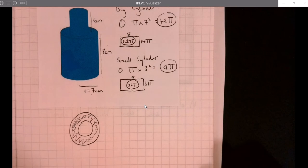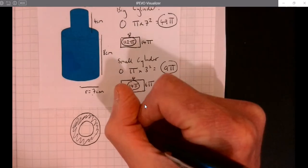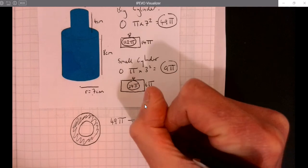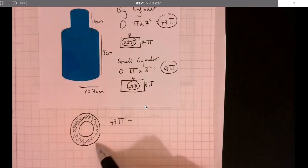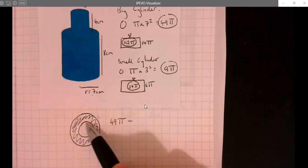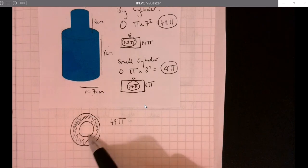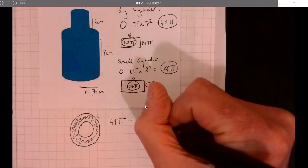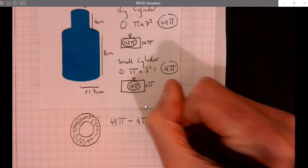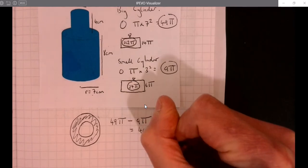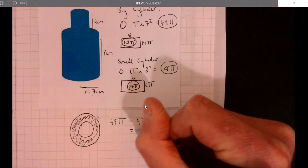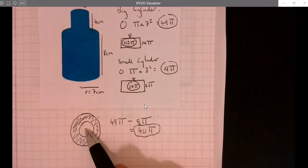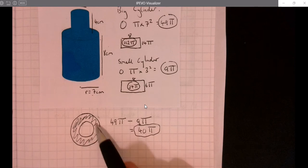It's going to be the area of the big circle, which was 49π, and then we're going to take away the area of the small circle, which we've already worked out was 9π. That's like punching out that middle bit. What we're left with is this outer section, that's going to give me 40π.